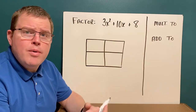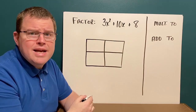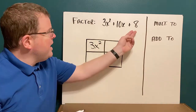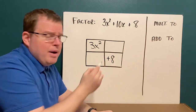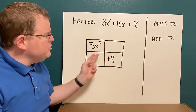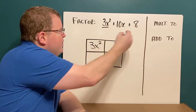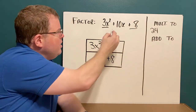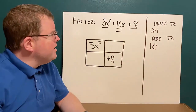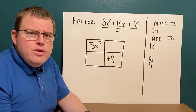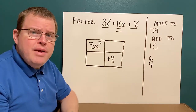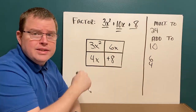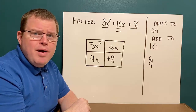Let's try another example. We want to factor the trinomial 3x squared plus 10x plus 8. We begin by filling in the grid: 3x squared goes in the top left and plus 8 goes in the bottom right. Now we need to figure out what goes in the two middle boxes. We look at 3 and 8 — 3 times 8 is 24. We want numbers that multiply to 24. The middle number is 10, so we want numbers that add to 10: 6 and 4. It doesn't matter which one you put in which space.